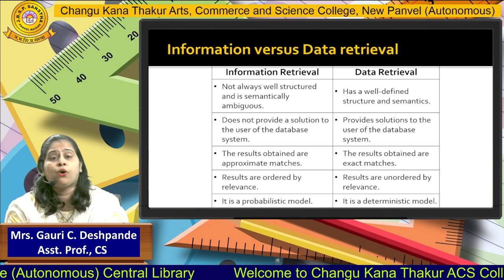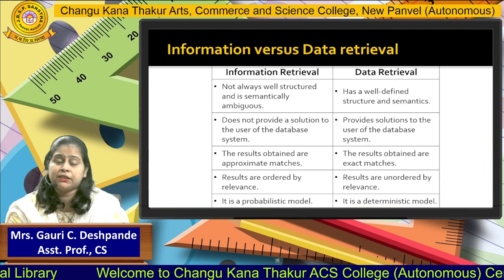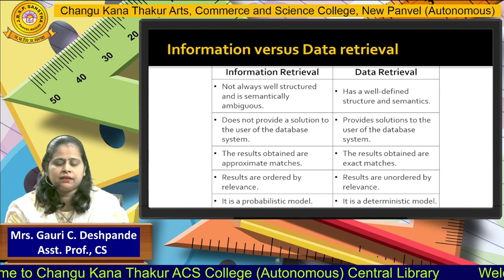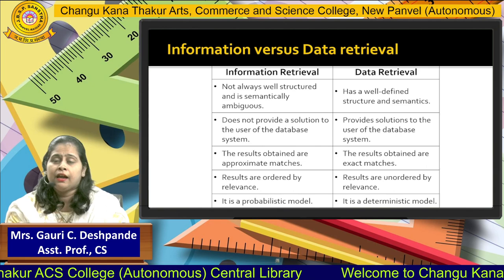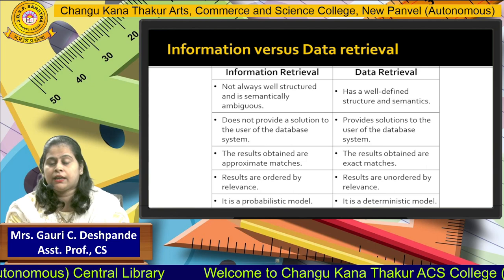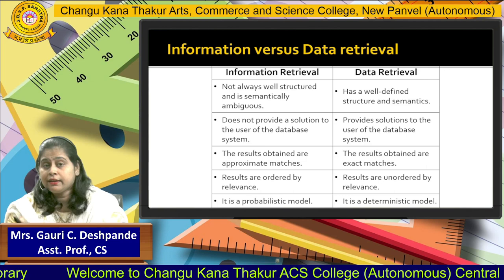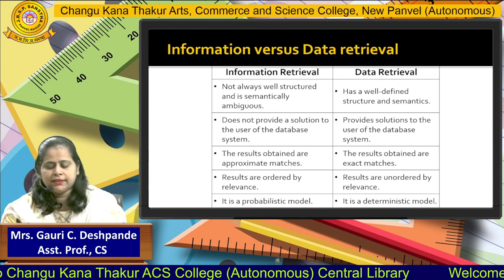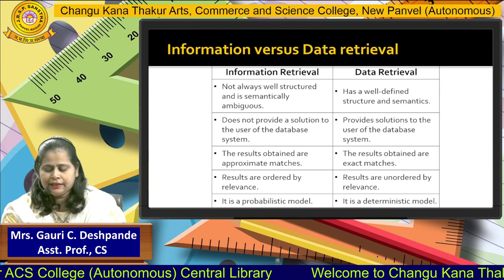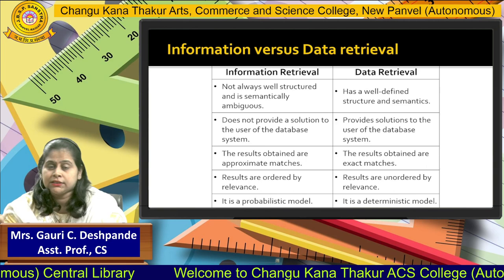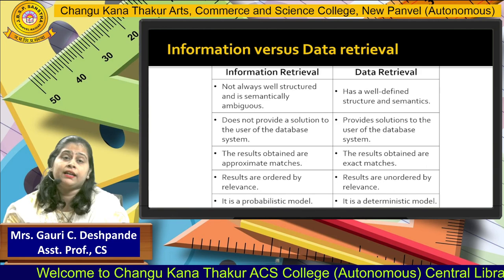The next difference is that IR is not structured — it contains both structured and unstructured data — but DR deals with structured data. Also, IR does not provide a guaranteed solution to the user; we can't always get data at a specific time. But in DR, if you provide the correct keyword, there is a guarantee to retrieve the data. In IR we get approximate data, whereas in DR the results obtained are exact matches.